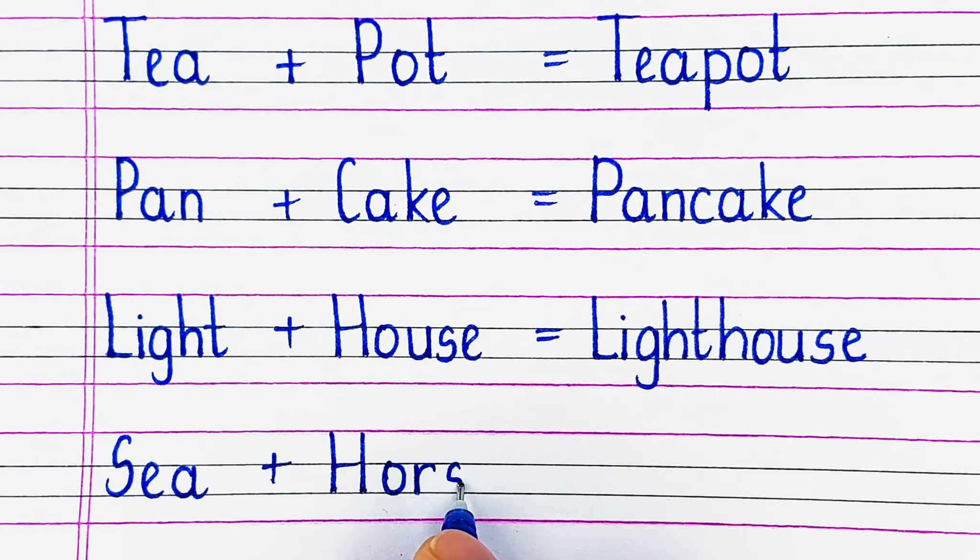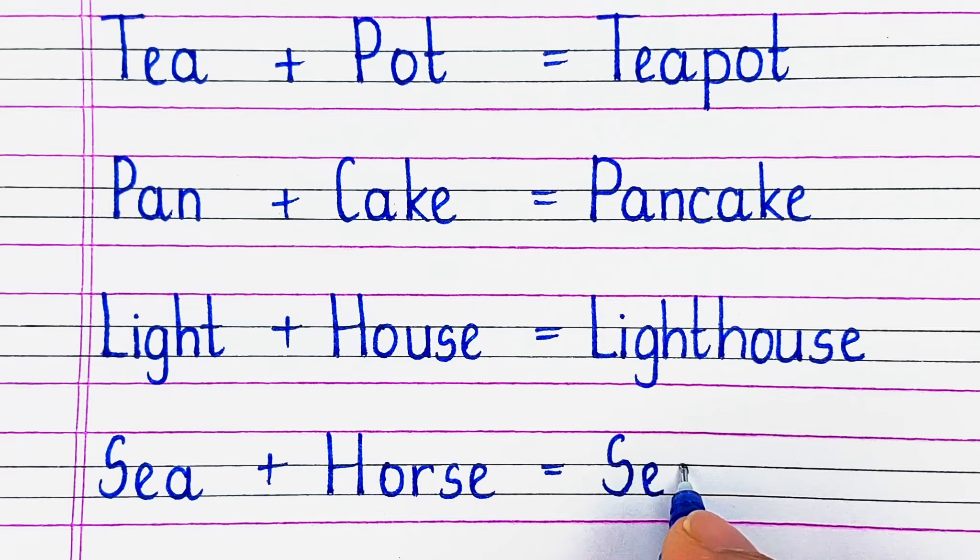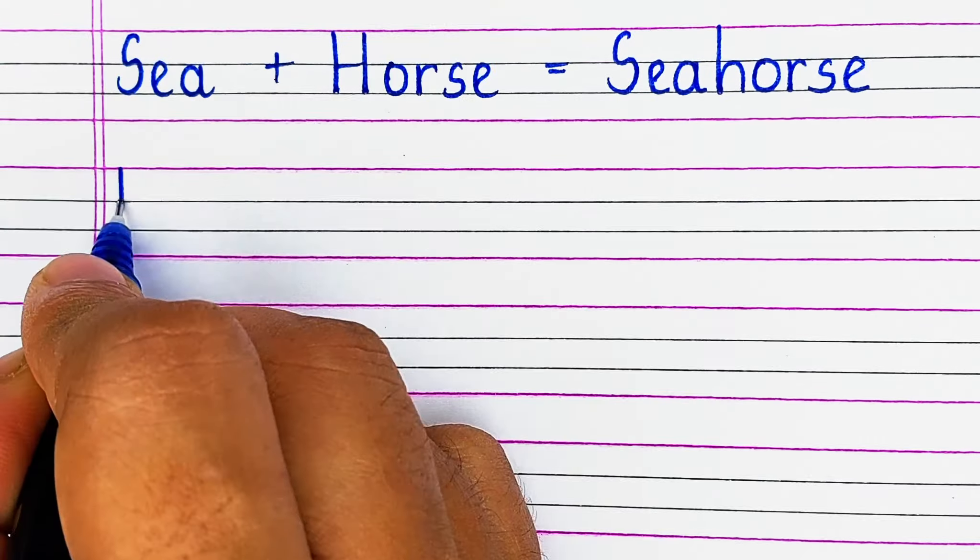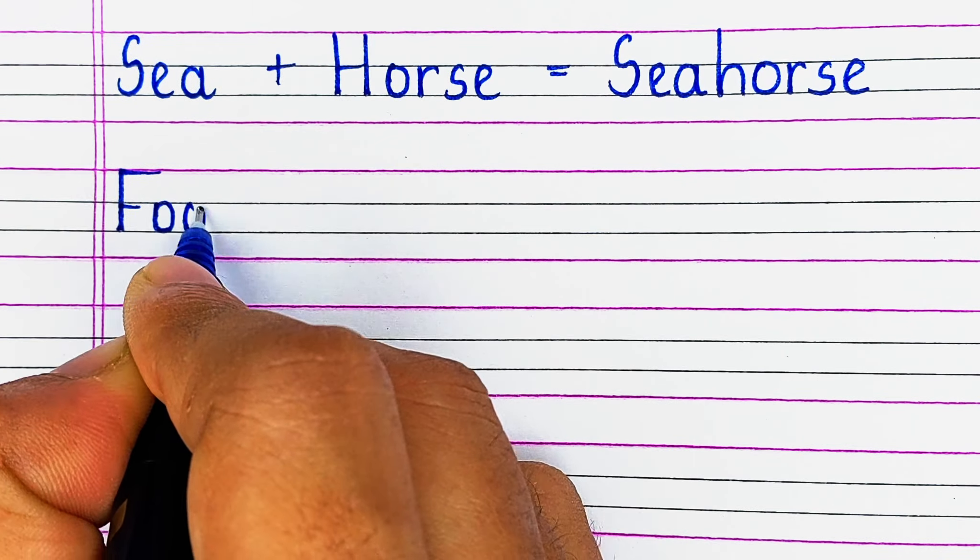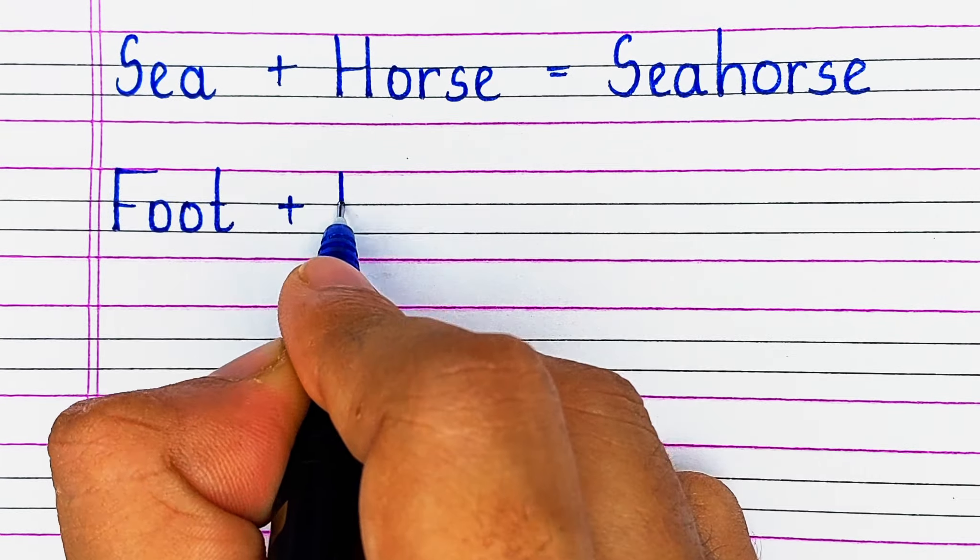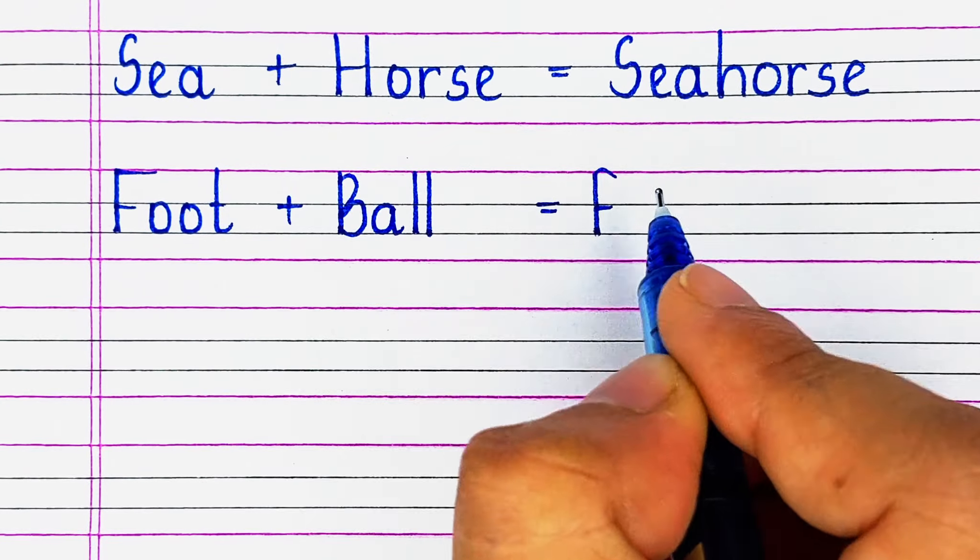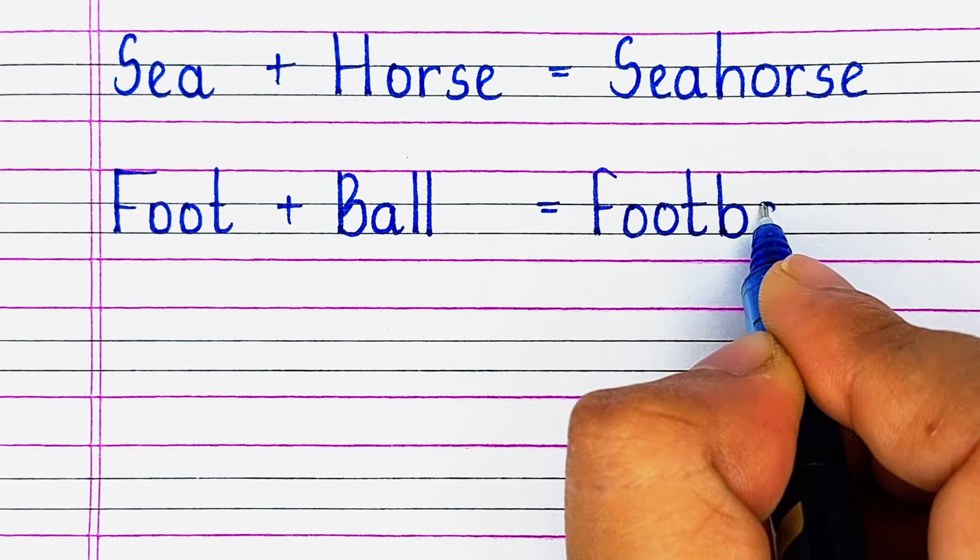Next is S-E-A sea plus H-O-R-S-E horse, seahorse. Next, F-O-O-T foot plus B-A-L-L ball, football.